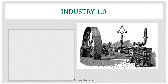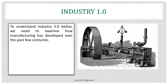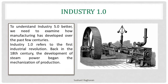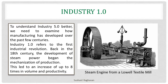To understand Industry 5.0 better, we need to examine how manufacturing has developed over the past few centuries. Industry 1.0 refers to the first industrial revolution. Back in the 18th century, the development of steam power began the mechanization of production. The steam engine from a Lowell textile mill led to an increase of up to 8 times in volume and productivity.